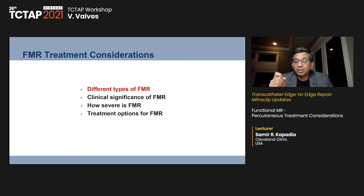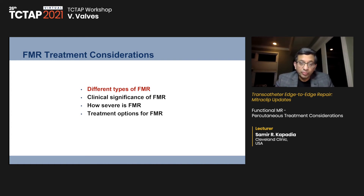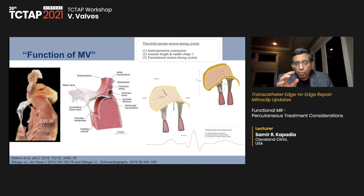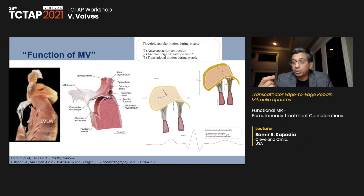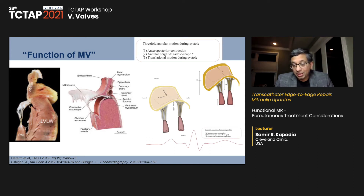Regarding treatment options: all heart failure treatments are very important for functional mitral regurgitation, especially with reduced ejection fraction. If ejection fraction is preserved, this is not necessarily true. If reduced, all guideline-directed medical therapy treatments should be considered as first-line. Surgical treatment is a class 2B indication for FMR.